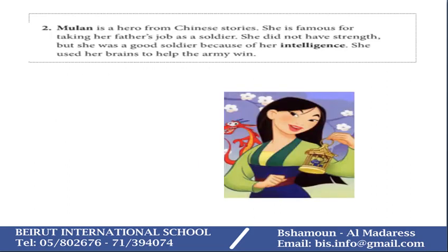Mulan is a hero from Chinese stories. She is famous for taking her father's job as a soldier. She did not have strength, but she was a good soldier because of her intelligence. She used her brains to help the army win. From this short paragraph, I can understand that Mulan was very smart. The last sentence explains the meaning of the word 'intelligence.'